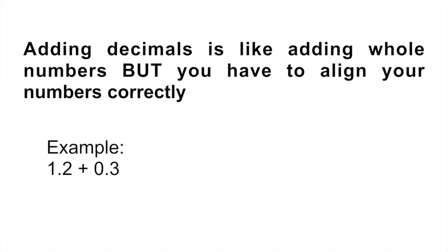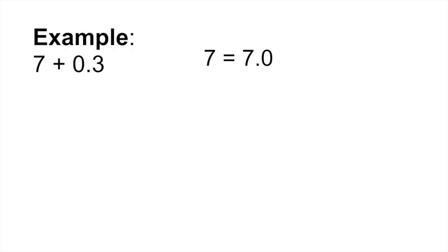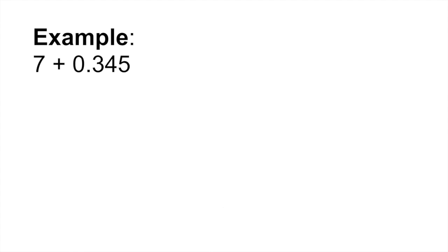So if they asked you to add 1.2 plus 0.3, what you want to do if you have to do this manually without a calculator is to make sure those decimal points are right, one on top of the other. Then it's pretty straightforward — you just add, so that would be 1.5. Now what if they give you a whole number, like 7 plus 0.3? In this case, you have to remember that a whole number — another way to express it would be 7 is equal to 7.0. So to add, you would simply align those numbers and it would be 7.3.